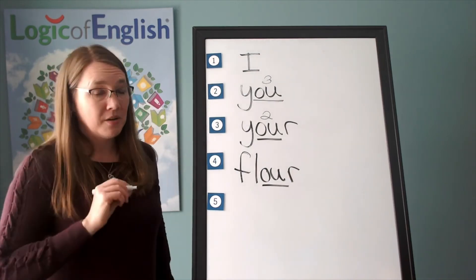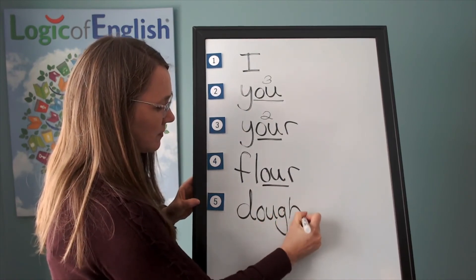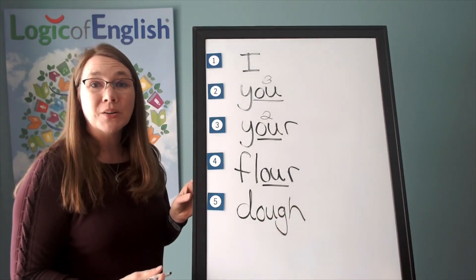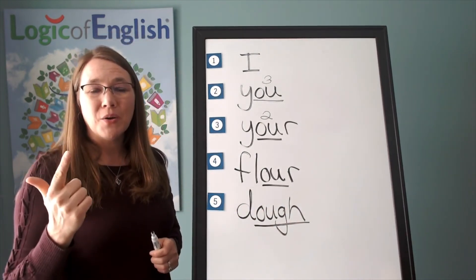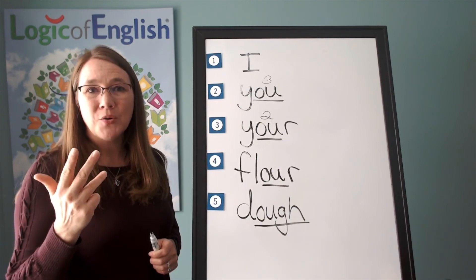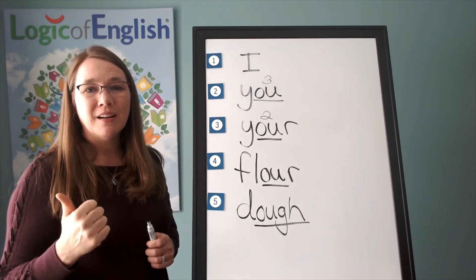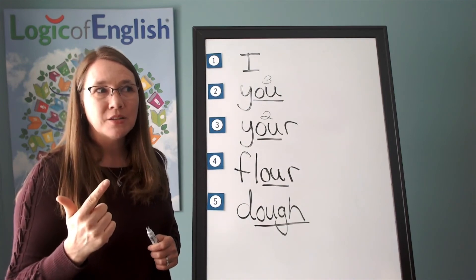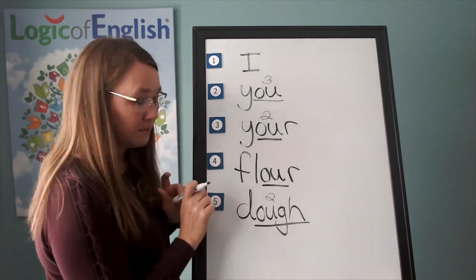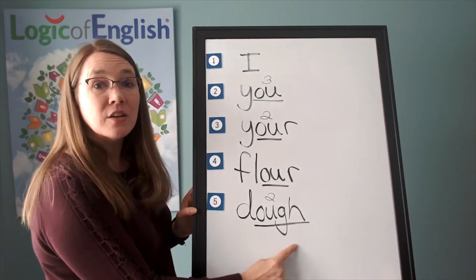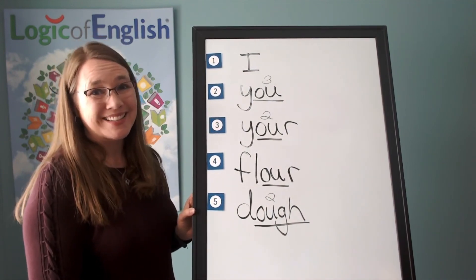Very good. Now help me write it. Dough. O. And how will we mark it? We'll underline the O. And what sound of ah, o, oo, ow, off, off do you hear in dough? Ah, o, d, o, dough. It's the second sound. So we'll put a two over it. Let's sound it out. D, o, dough. Great work with these words today.